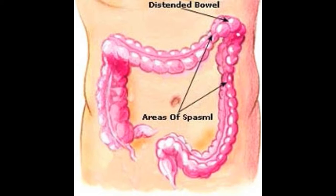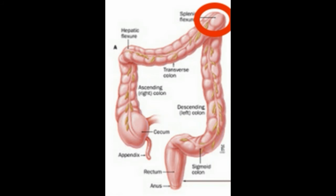Splenic flexure syndrome is often diagnosed when gas is trapped in the area. This can cause extreme pain and discomfort and is sometimes mistaken for the pain of a heart attack because of its location in the upper abdomen. Treatment and even diagnosis of this syndrome are still debated and often handled differently depending on the treating physician's opinion.